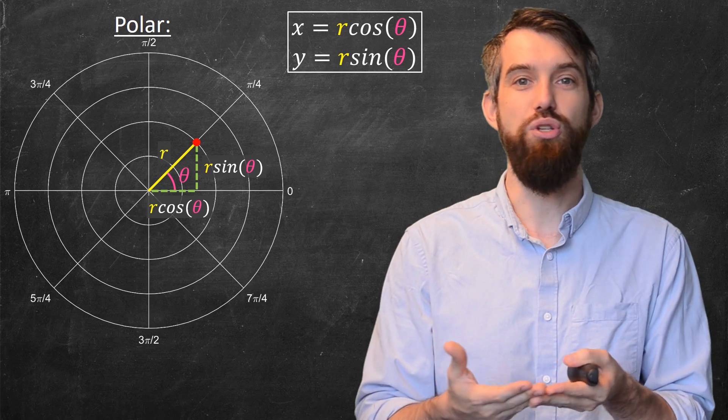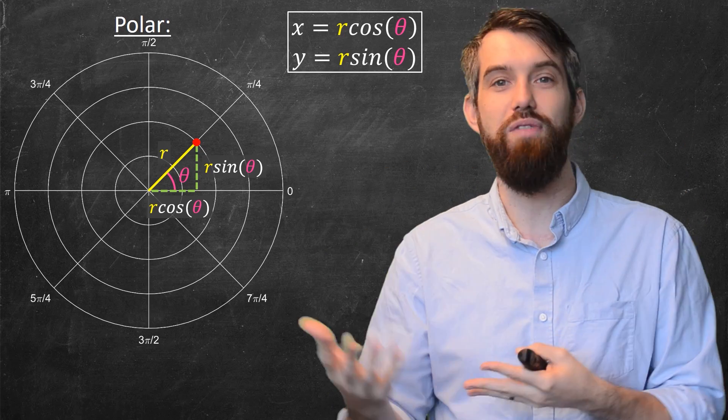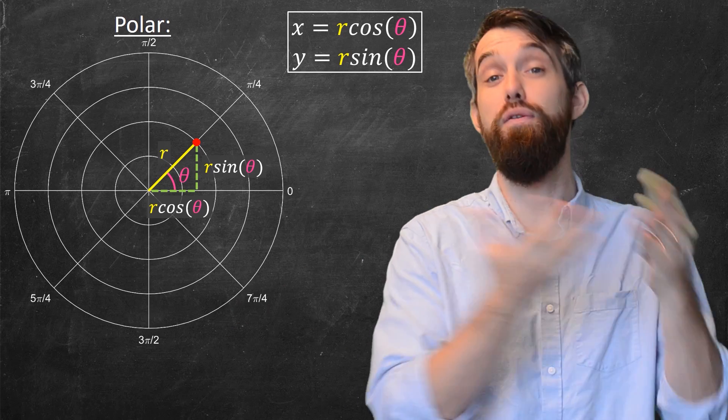And so I have these conversion formulas that say x is r cos theta and y is r sine theta. So this gives a mechanism to take two points described in polar and convert it into Cartesian, and likewise, you could solve these equations for r and theta and be able to convert the other way around.